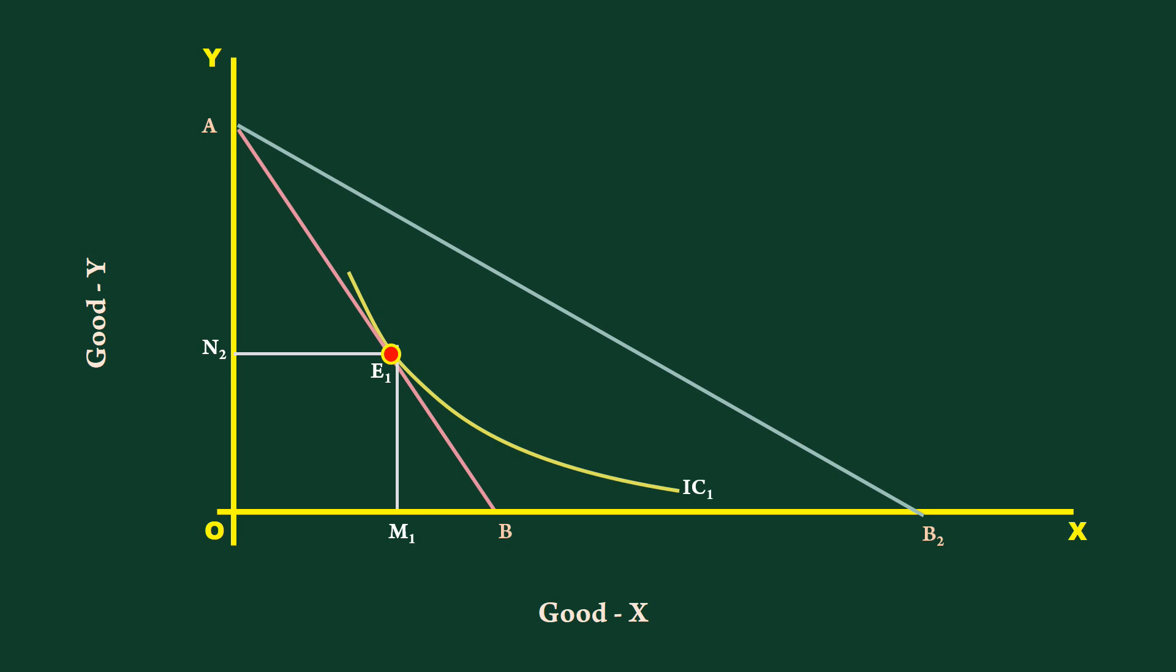After a fall in the price of good X, the consumer will buy more of good X because of two reasons: relative cheapness of good X is Substitution Effect, and increase in the purchasing power is Income Effect.